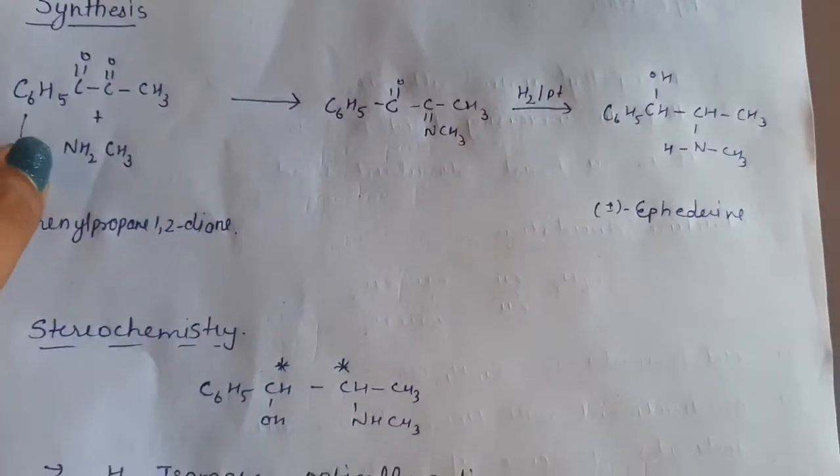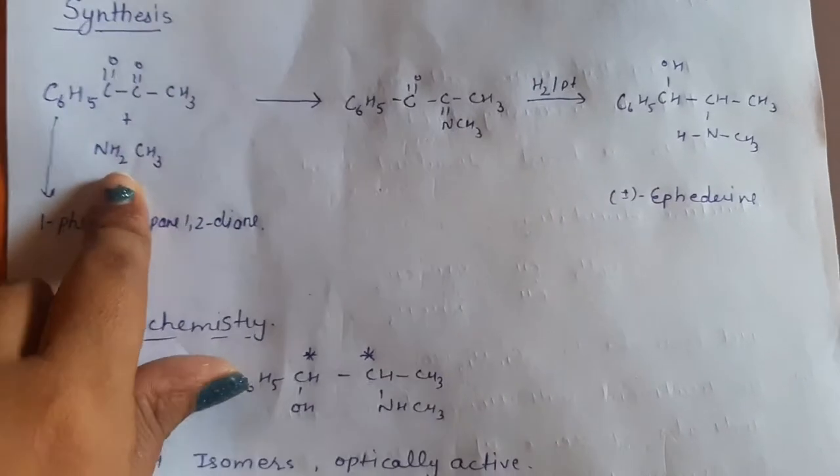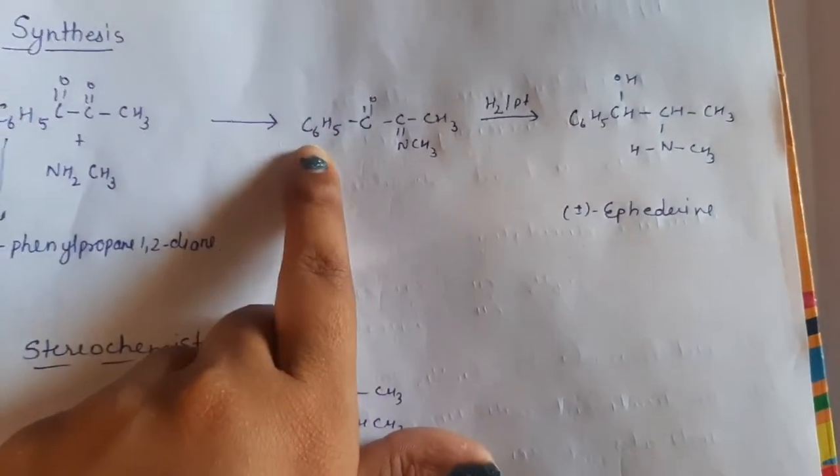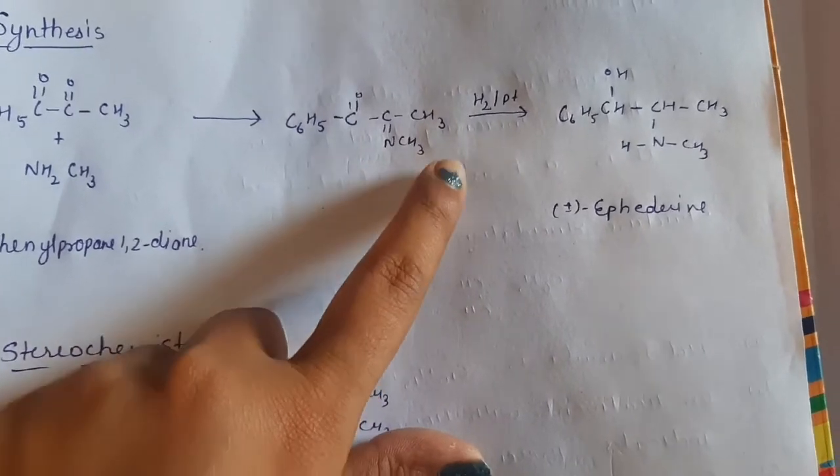The nitrogen will attack on the carbon, and we will get the formation of C6H5-C double bond O-C double bond NCH3-CH3.